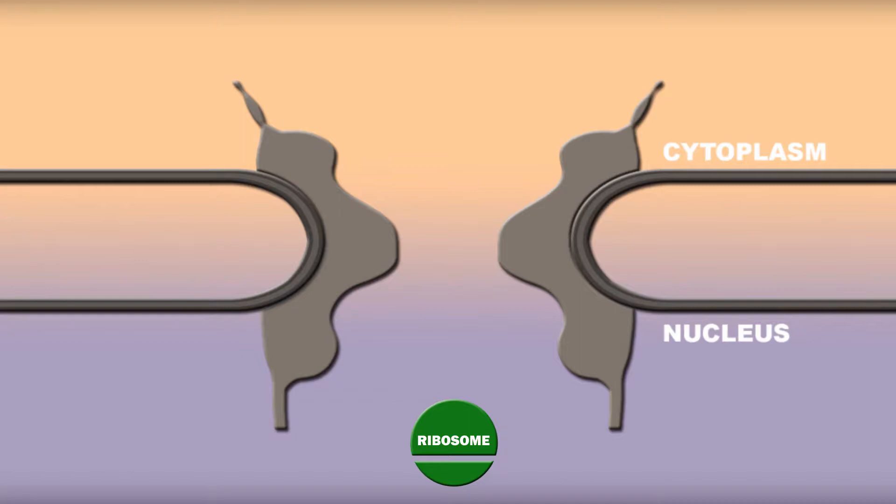Ribosomes, which are huge, actually get assembled in the nucleus and must then be exported. Being 30 nanometers across, they can't get back in from the cytosol.